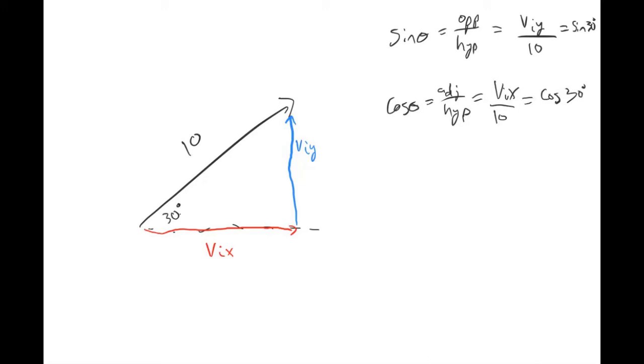So if you want to solve for the initial x and y components, you just rearrange this equation and you get 10 sine 30 degrees, and then for the x component you get 10 cosine 30. So if you plug this into your calculator and if you're using degrees make sure your calculator is in degrees mode and not radians mode.